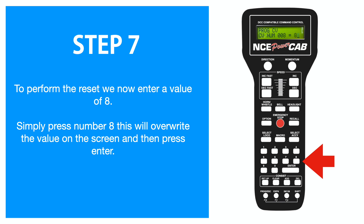I'll post a link in the description showing the various manufacturers, their IDs, and CV8 reset values. The vast majority use eight — so Zimo, Digitrax, and ESU all use CV8 to reset their decoders — but some other manufacturers require a different value for the decoder to reset properly.